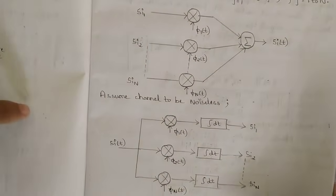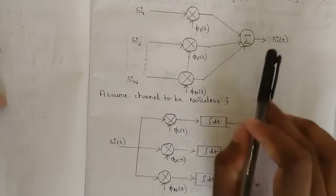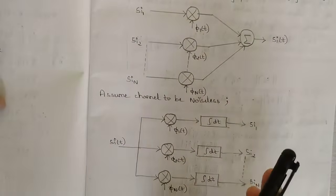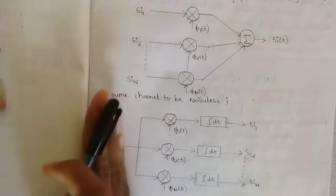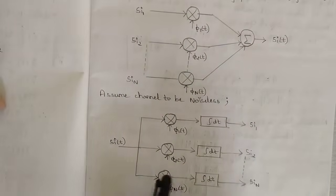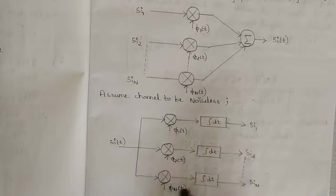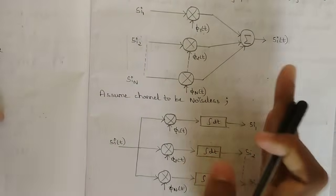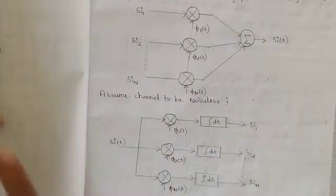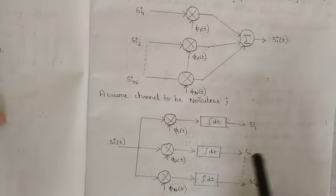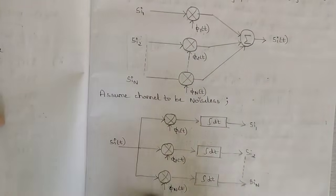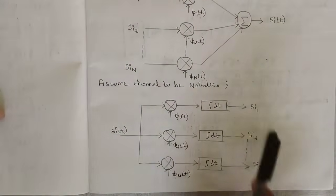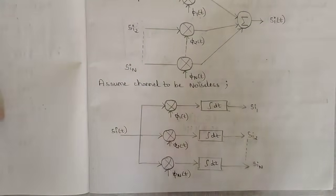To recover the energy signal components from SI of T, we consider the noiseless channel where SI of T is split into different categories to get the inverse. We get φ₁(T), φ₂(T), φ₃(T), up to φₙ(T), each passed through an integrator block. When passing through the integrator block, we get back our energy signals SI₁, SI₂, up to SIₙ. This is the inverse process block diagram for the geometric representation.